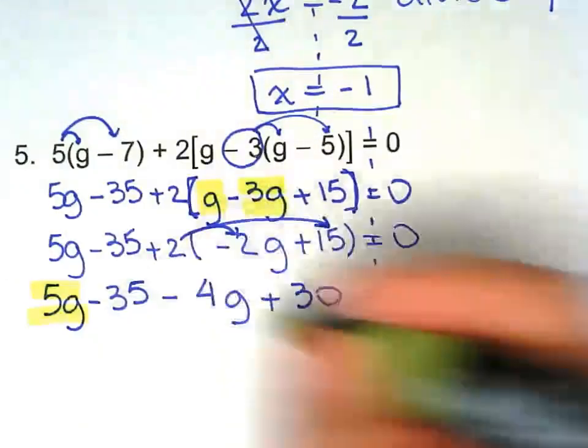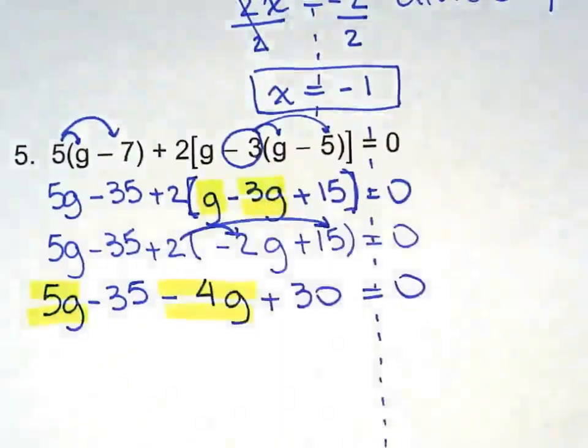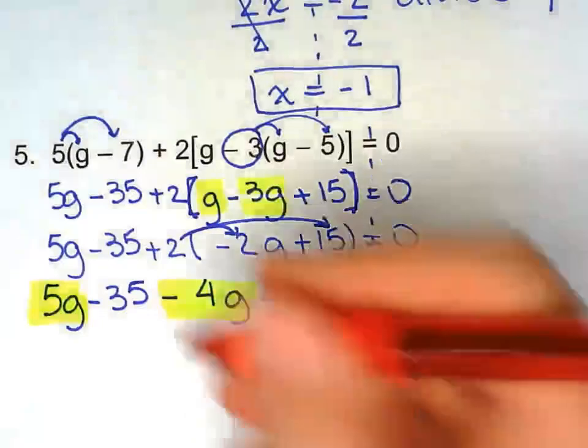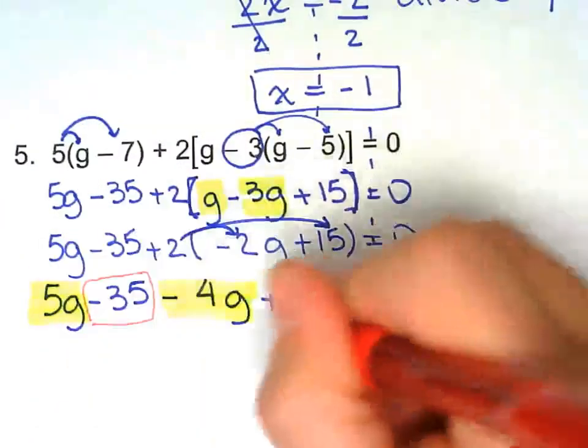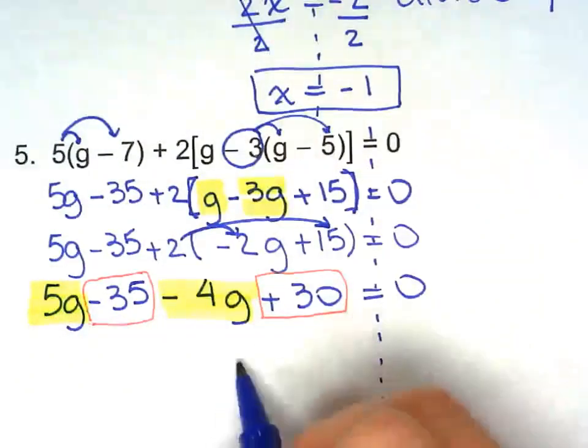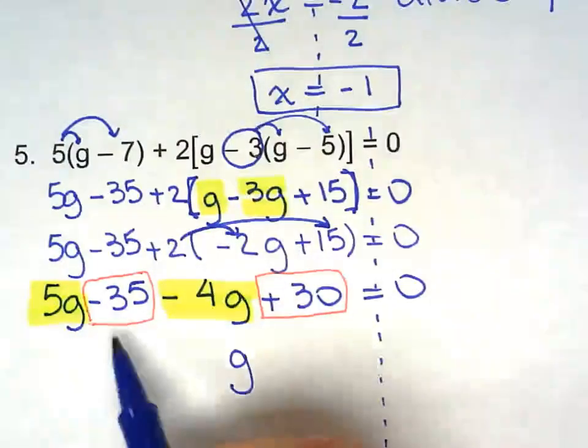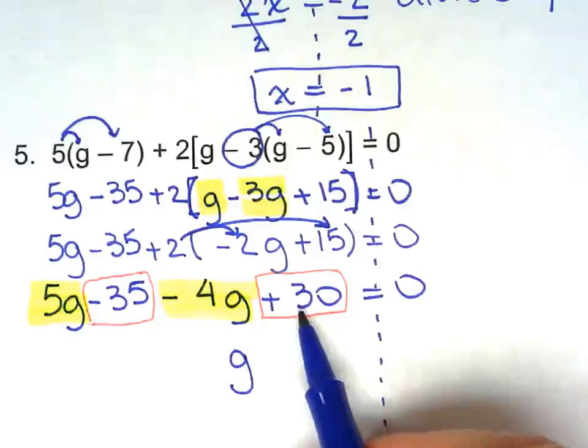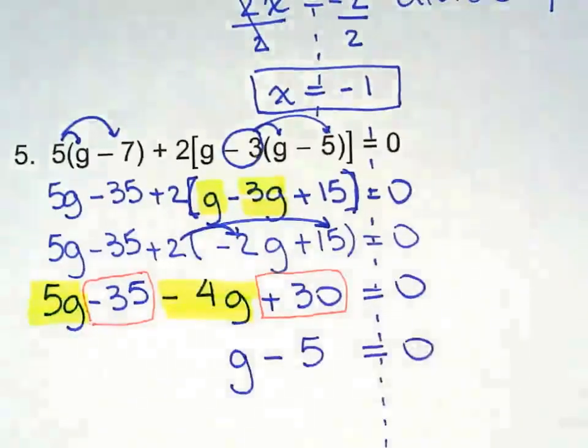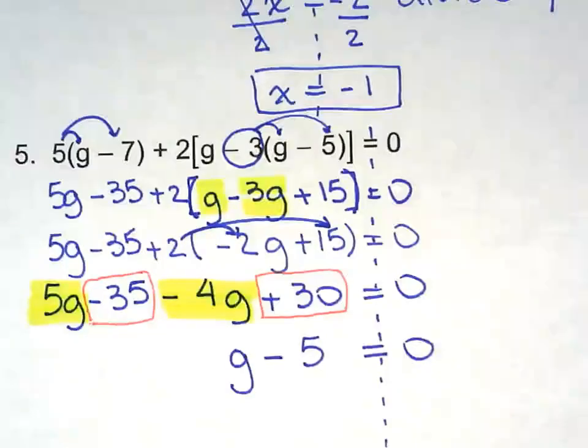So I have 5g I can combine with 4g. And I have negative 35 I can combine with 30. 5 take away 4 is 1g. Negative 35 plus 30 is negative 5. It's looking better.